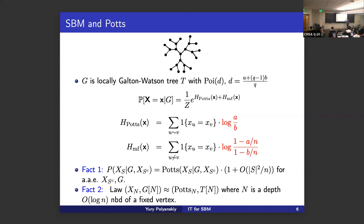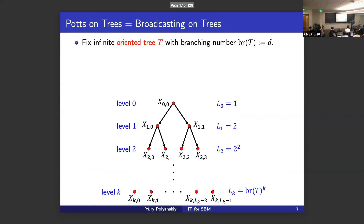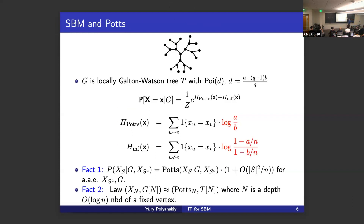There is conditional independence: if you're interested in the distribution of a little neighborhood, it only interacts with the outside through the value on the boundary. This is exactly true for the Potts model. There's an influential paper by Elkanan showing that this model, while not a Potts model on an Erdős–Rényi graph, locally looks like one — specifically like a Potts model on a tree. So let's understand the Potts model on a locally tree-like graph.